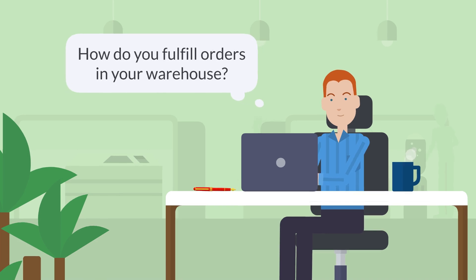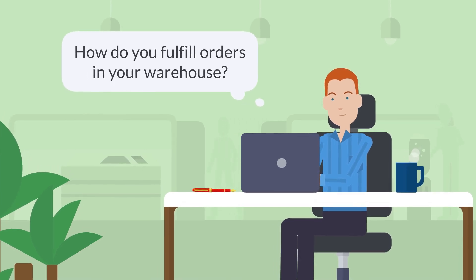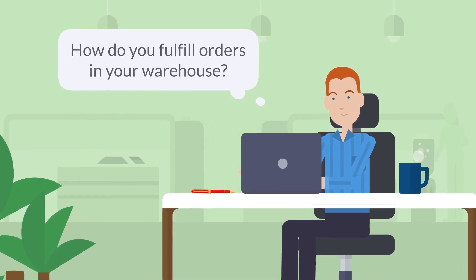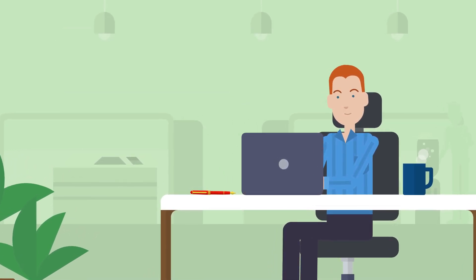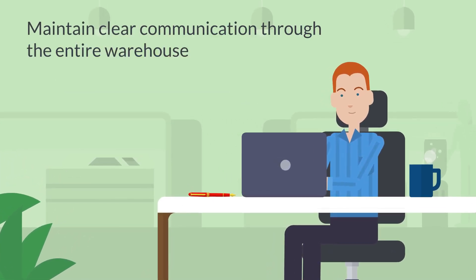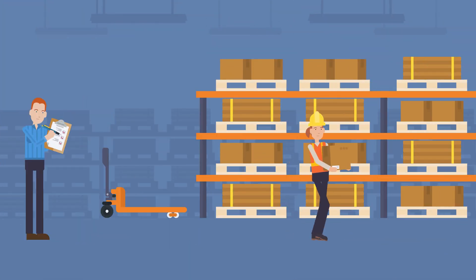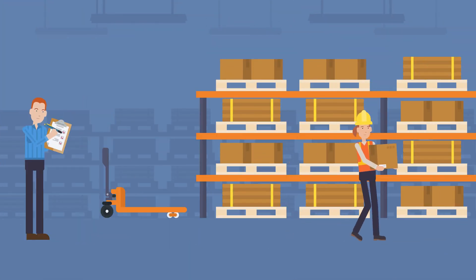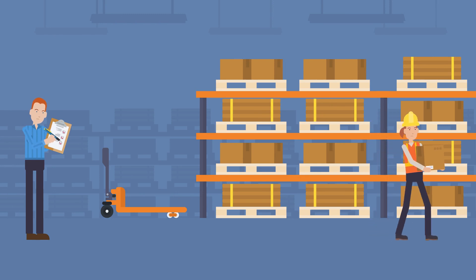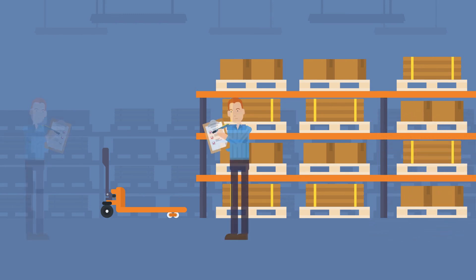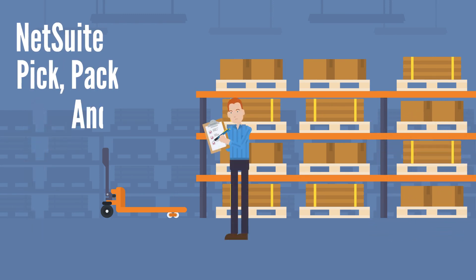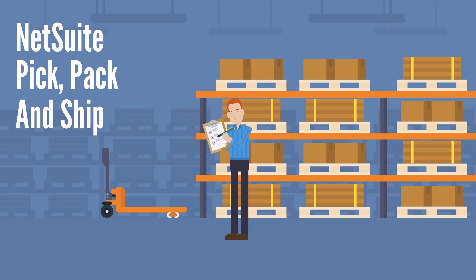How do you fulfill orders in your warehouse? Having a well-defined order fulfillment process is essential for maintaining clear communication through the entire warehouse, no matter how many individuals need to touch a single order to get it out the door. The NetSuite Pick, Pack, and Ship feature gives you that essential communication in your order fulfillment process.